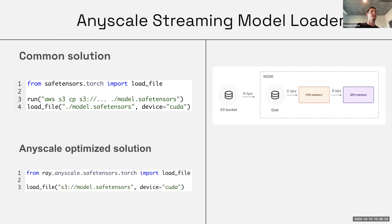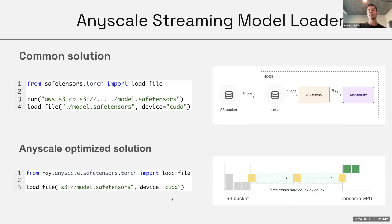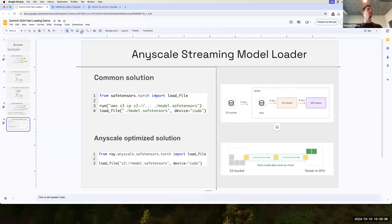AnyScale offers a SafeTensors-compatible client that allows you to directly load from remote storage like S3 or Google Cloud Storage. You pass the remote URI and load directly onto a GPU. Under the hood, AnyScale does this in a streaming fashion, taking advantage of pipeline parallelism — instead of downloading the entire file first, it fetches model tensors chunk by chunk and streams them onto the GPU as they're ready, making a significant difference in end-to-end download times.